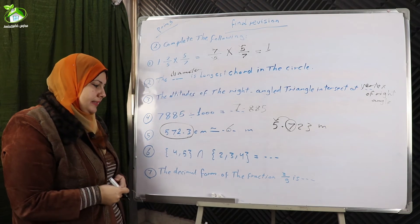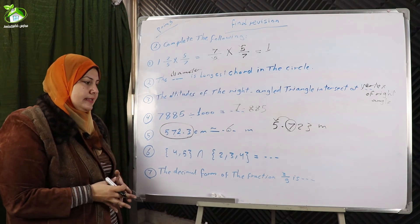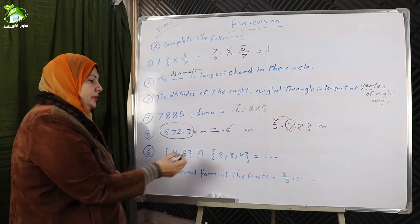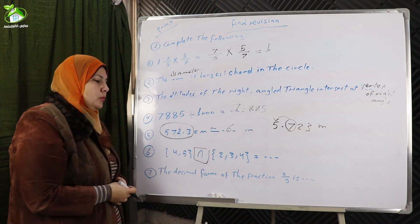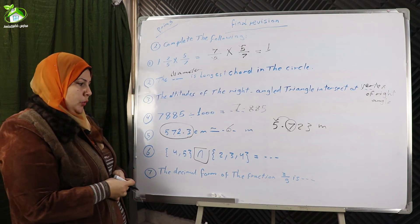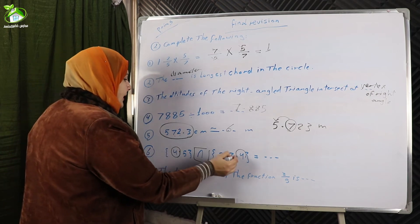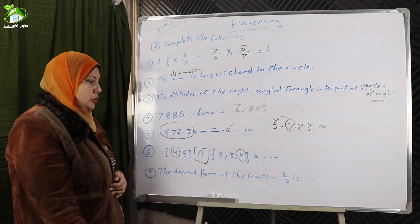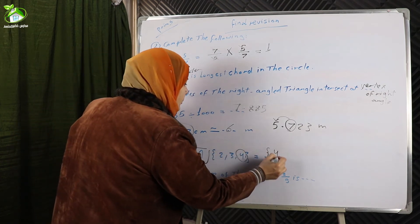Number six: the set {4, 5} intersect the set {2, 3, 4}. Intersection means the common element between two sets. We note that four is the common element. So the intersection is the set {4}.